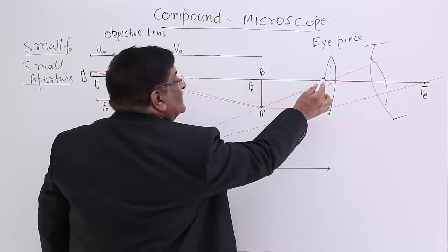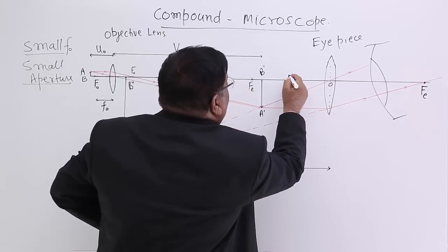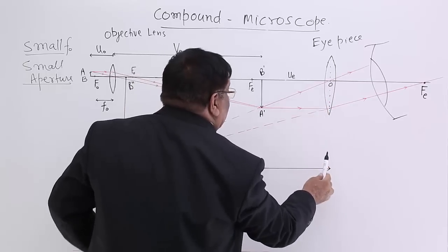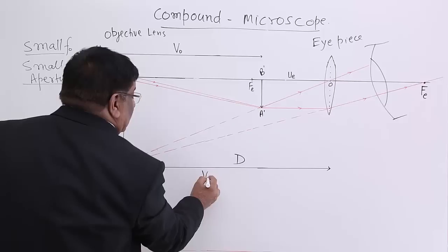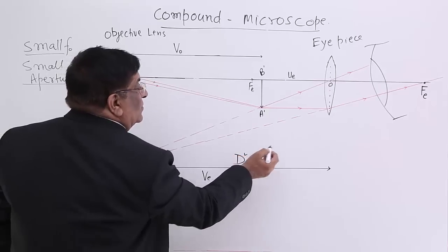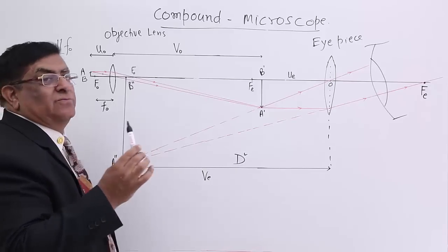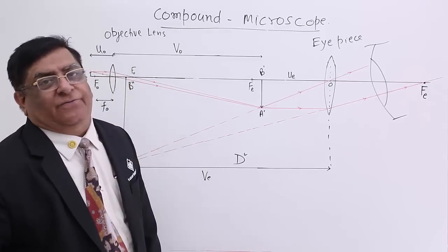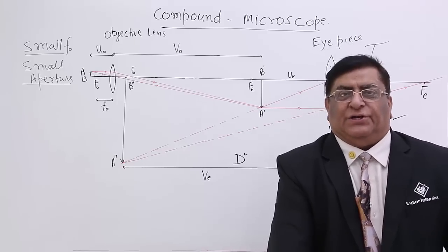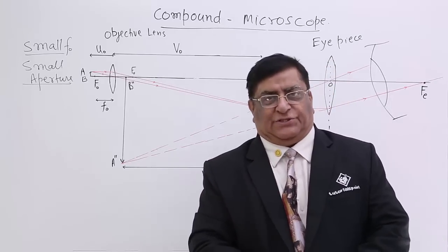The object is between the focus and optical center of the eyepiece. By adjustment of U — the object distance for the eyepiece — V for the eyepiece keeps changing, and we set it so that V becomes equal to the distance of distinct vision. When this equals the distinct vision distance, I am able to see the image most clearly. This is how a compound microscope is set — this is the setting for distinct vision. There are two types of setting: one for distinct vision and one for parallel rays.